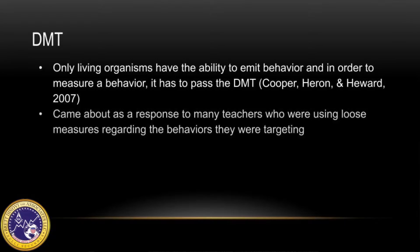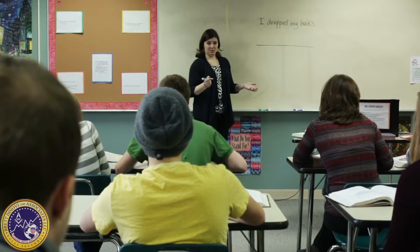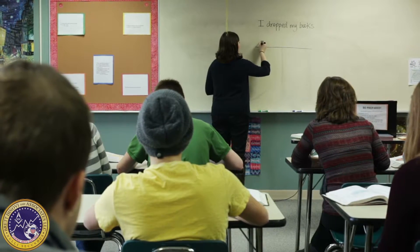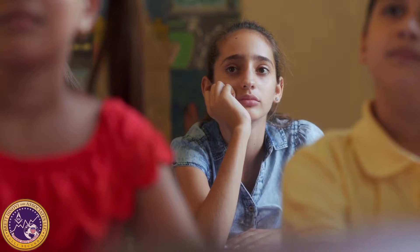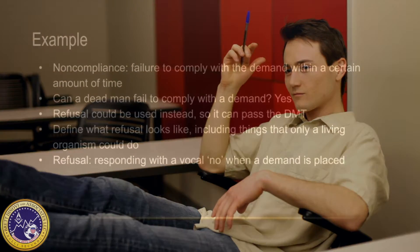The dead man's test came about as a response to many teachers who were using very loose measures regarding the behaviors they were targeting. For example, teachers were tracking duration of on-task behavior when in reality time on task was just students sitting at their desk and not necessarily attending or engaging to the task at hand. Another example would be minutes without a tantrum — what was the child doing when there was no tantrum? Because technically a dead man can also not emit a tantrum.